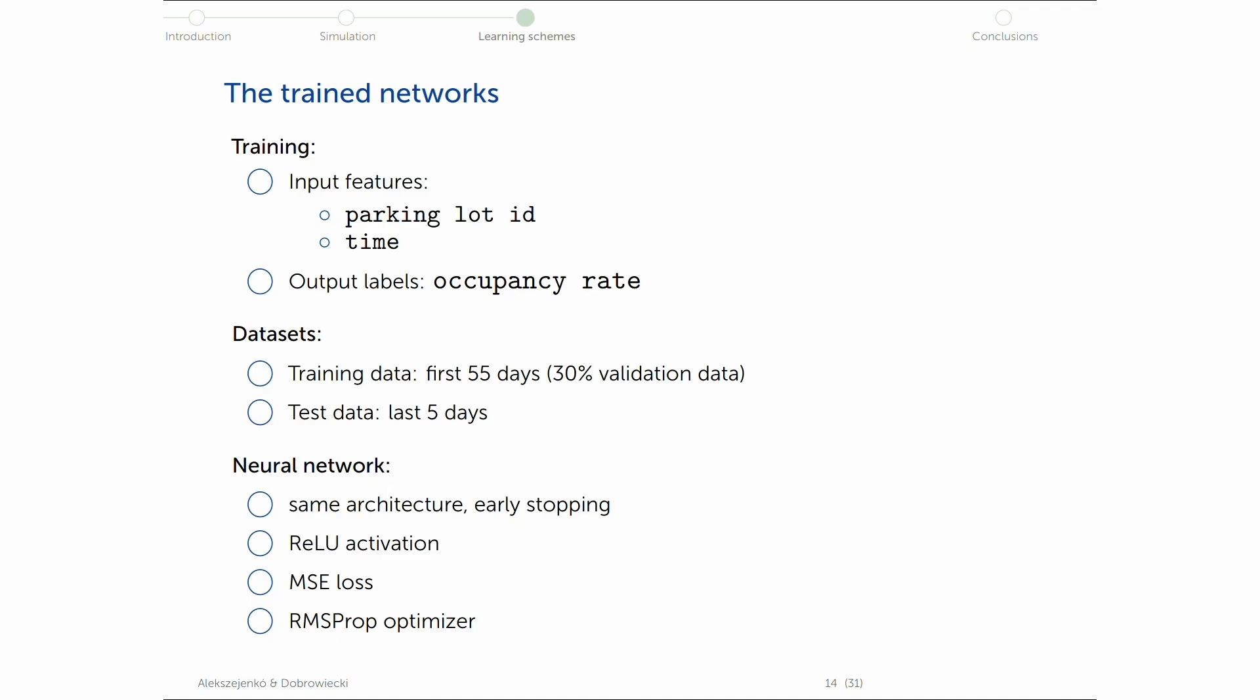And we pretty much used the same architecture. We trained it until early stopping, so I don't know how many epochs we trained, but the improvement was so little that we stopped the training. We used ReLU activation, MSE loss functions, and RMSprop optimizer because somehow it behaved the best on this data. Our input features were parking lot ID in the MOST and the recording time, and we wanted to predict the parking lot occupancy rate.